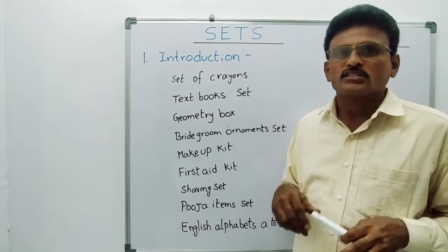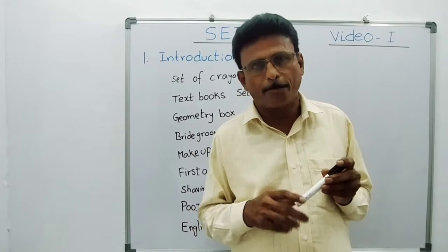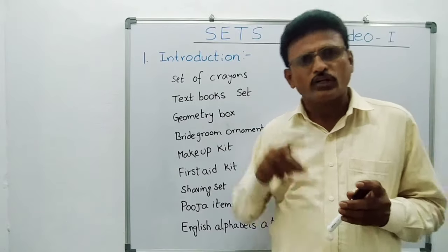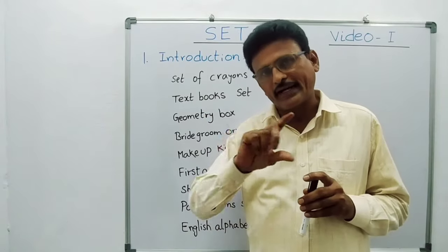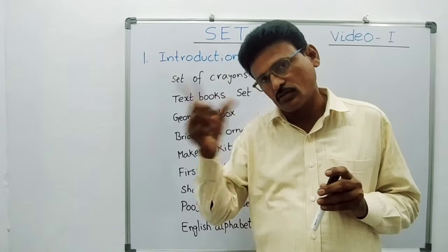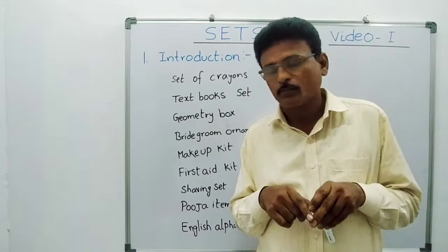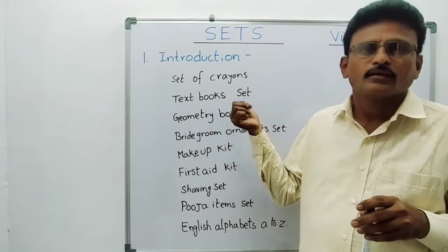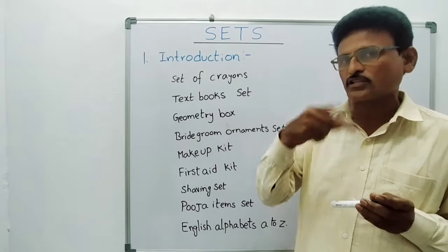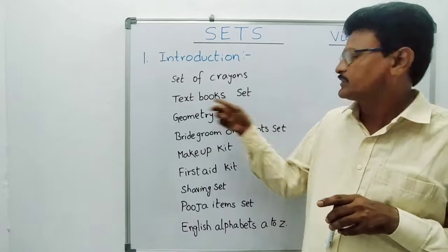Some students go to purchase items from a bookshop. They will ask: uncle, give two sets of crayons. Immediately the shopkeeper will give a crayon set — most probably 12 different color crayons will be there. That is a SET of crayons. Somebody will ask for one set of 7th class textbooks, or 10th class textbooks — two sets — they will have all subjects complete. That is also a SET.